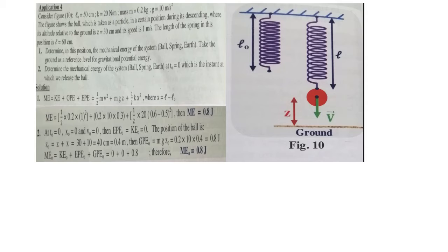So, what do we have in this system? We have kinetic energy because of the motion of the ball, gravitational potential energy because of the position of the ball above the ground, and elastic potential energy because of the stretching of the spring. Calculating all these quantities, we get mechanical energy equals 0.8 joules.